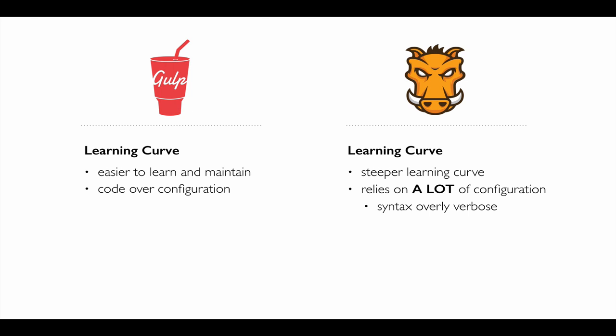Here are the two main reasons I personally chose Gulp. First, I think the learning curve on Gulp is much easier, and it's also easier to maintain — when you come back to it a few months later, it's much easier to pick up where you left off. When I was using Grunt, if I hadn't worked with it for a few months, I'd come back and realize I had totally forgotten how the whole thing was set up. Gulp uses the philosophy of code over configuration, while Grunt uses a lot of configuration, and I found the syntax to be overly verbose and hard to remember.